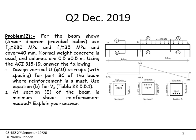Use the ACI 318-19 code. Answer the following: first, design vertical U-shaped stirrups with spacing for part BC of the beam where reinforcement is a must. Use Equation B for Vc from Table 22.5.1 — I usually provide that as a sheet during the test. I'm only asking for the spacing where reinforcement is required, not the location.